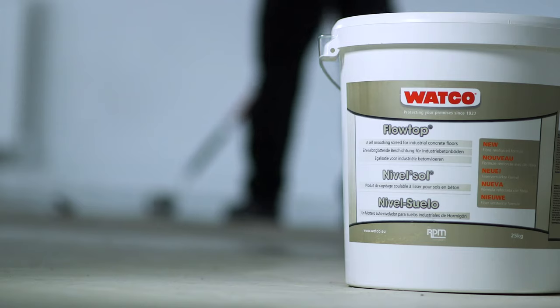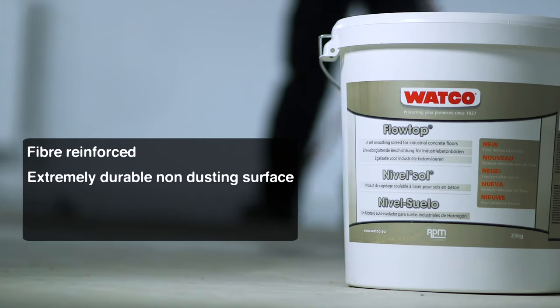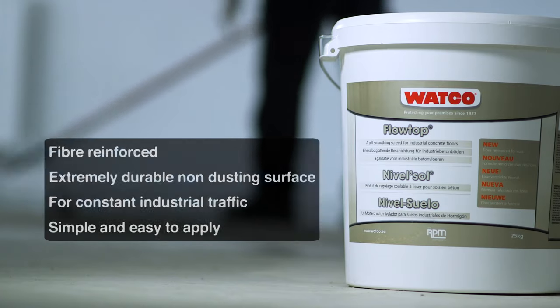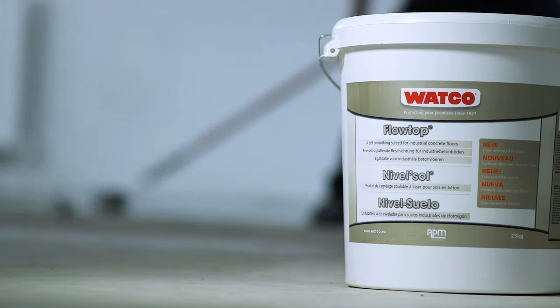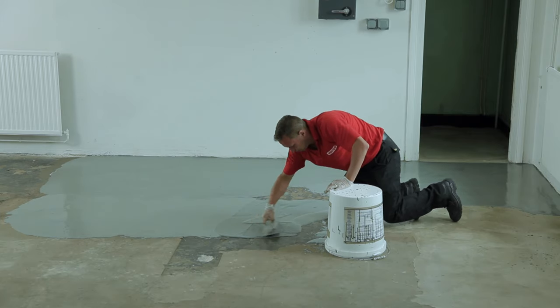Watco Flowtop and Watco Flowtop Coloured contains polyamide fibres, which makes it particularly strong. It has 33% greater compressive strength than most concrete surfaces. It's extremely durable and is suitable for forklift traffic and general industrial use. It's easy to apply and the smooth, non-dusting surface can be overpainted if required.